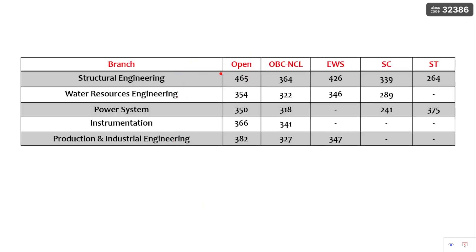Other branches like Structural Engineering, Water Resource Engineering, Power Systems, Instrumentation, Production, and Industrial Engineering are also given here. You can go through the cutoffs. I have covered major NITs with category-wise and branch-wise cutoff information.